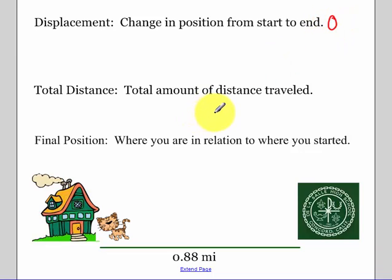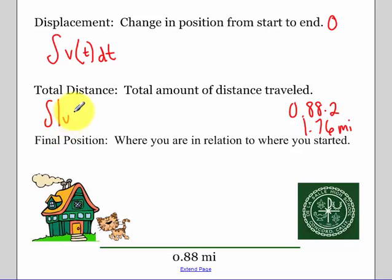But the total distance I traveled is the amount of miles I walked, so 0.88 times two, which is 1.76 miles. So displacement is the integral of velocity over your time, over the time interval with respect to time, versus total distance is the absolute value of velocity with respect to time. The integral. And this is important to know.